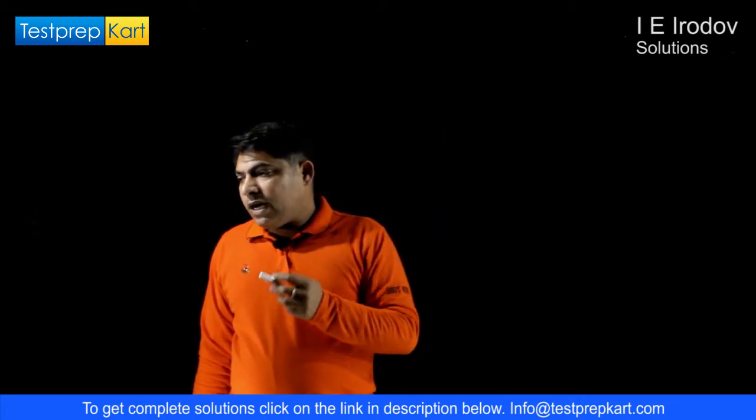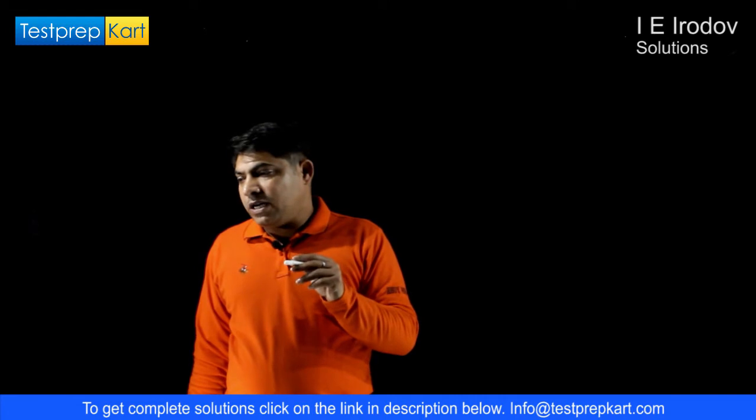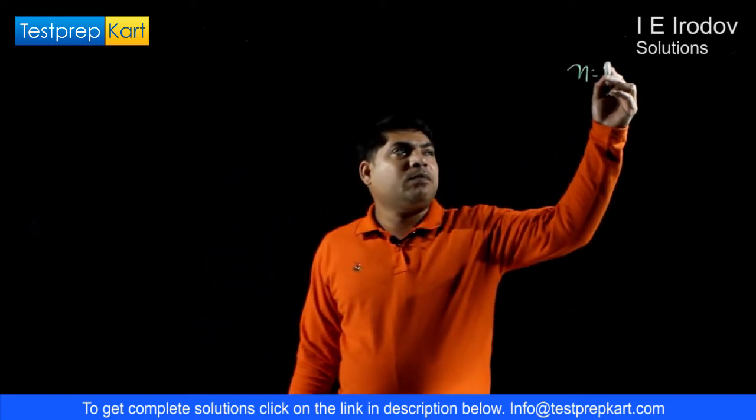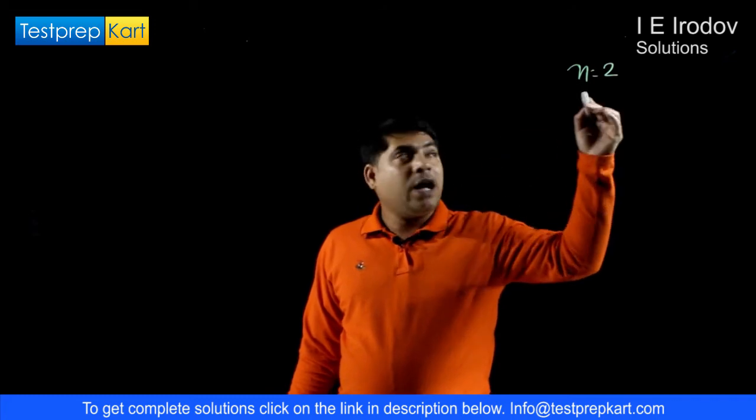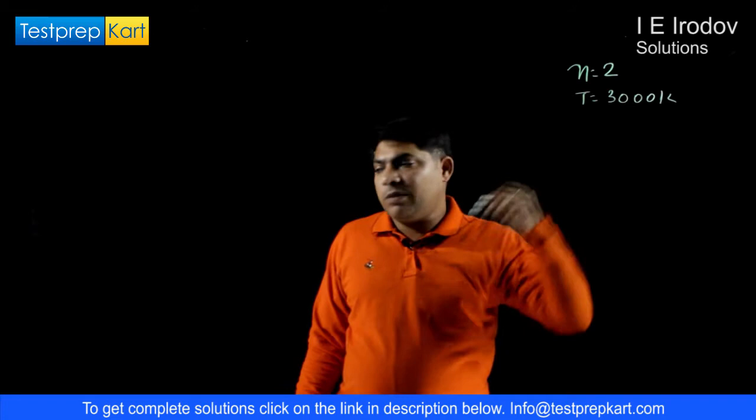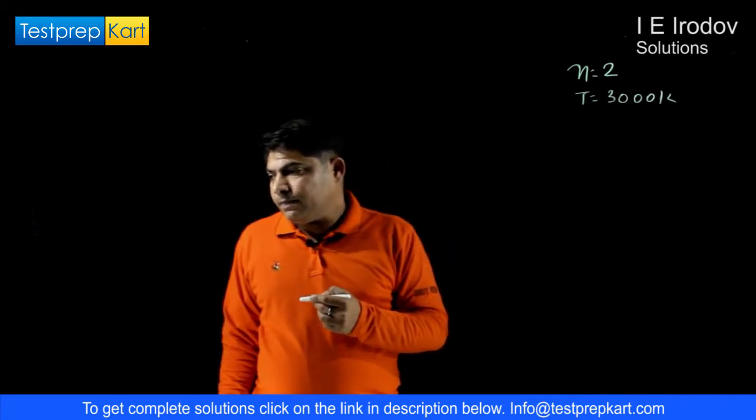So here we need to calculate the fraction of hydrogen atoms that is in a state of principal quantum number n equals 2 at temperature 3000 Kelvin. Let us see.